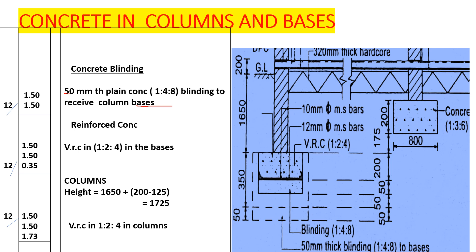Now let's proceed to the bases. Our base depth is 350mm, and the plan size is 1500 by 1500. We book this in cubic metres: 1.5 by 1.5 by 0.35. There are also 12 bases. We describe this as: vibrated reinforced concrete, mix 1:2:4, in the bases.